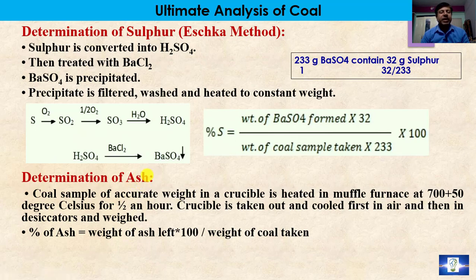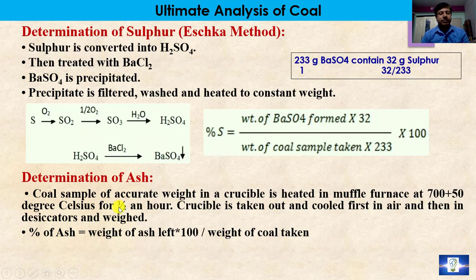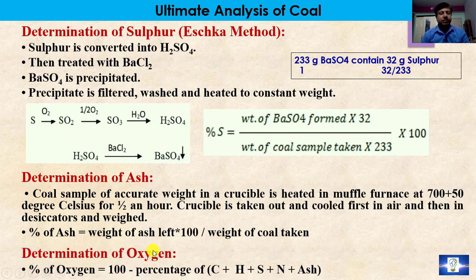Determination of ash: a coal sample of accurate weight in a crucible is heated in a muffle furnace at 700 ± 50°C for half an hour. The crucible is taken out, cooled first in air and then in a desiccator, and weighed. Percentage of ash = (weight of ash left × 100) / weight of coal taken. Determination of oxygen: oxygen % = 100 − (% carbon + % hydrogen + % sulfur + % nitrogen + % ash).